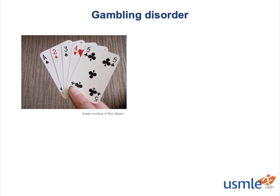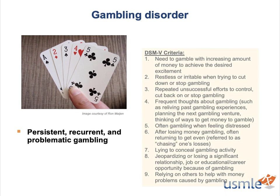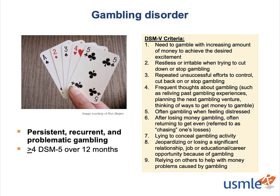Gambling Disorder is classified in the DSM-5 as a disorder of persistent, recurrent, and problematic gambling. If you're a psychiatrist, you have to diagnose gambling disorder based on a list of greater than four criteria over twelve months. But for the purposes of Step 1, it's simply enough to know that these overlap substantially with the diagnostic criteria for substance abuse disorder.